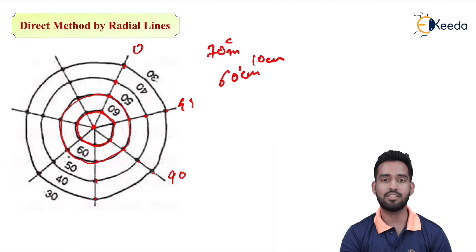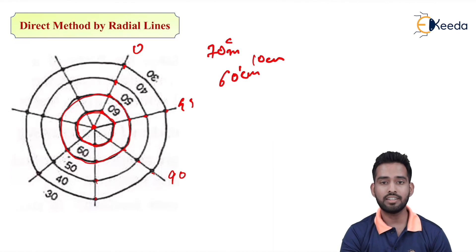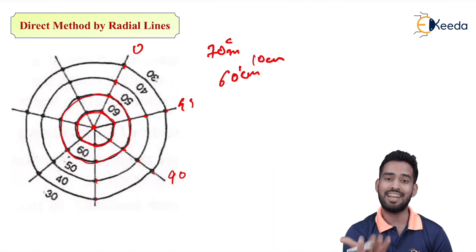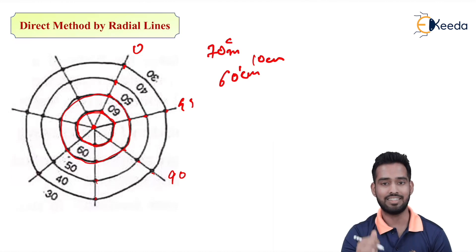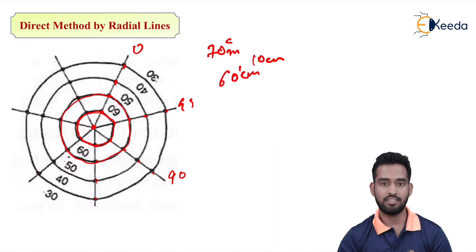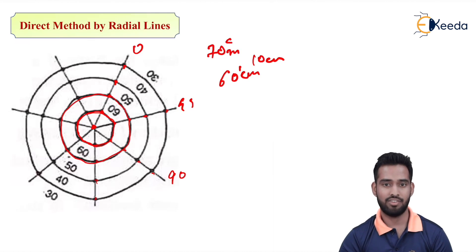These joined lines represent contours of the required RL. That is why this is known as the direct method by radial lines — direct method because we are plotting the contour on the field directly, not using any sheet. We are drawing the contours on the field itself, and we are using radial lines. It is the simplest method we can use on the field directly where the area can be observed completely.